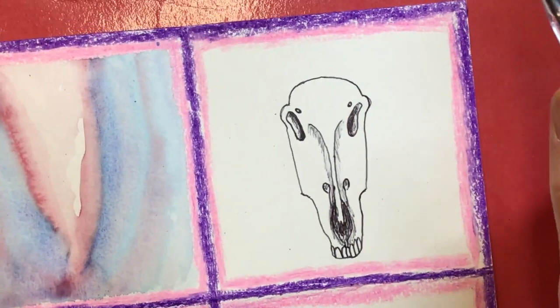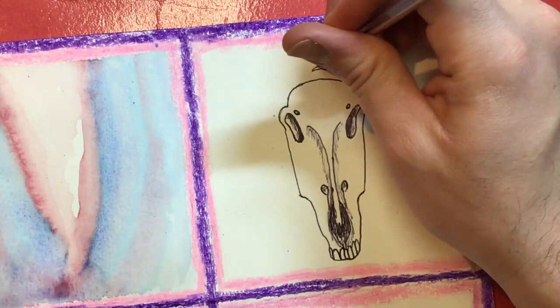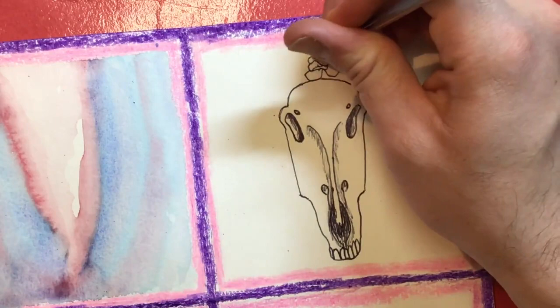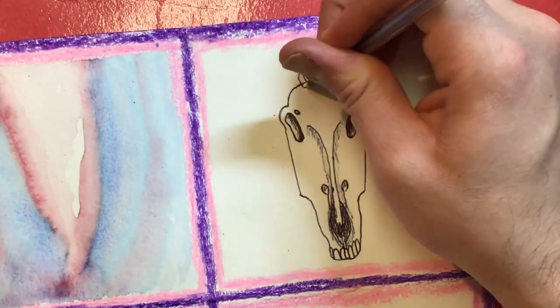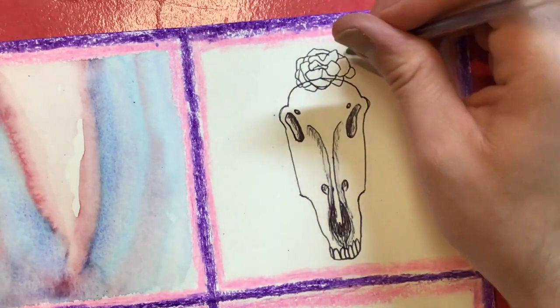And then we're going to put on our horse's head a beautiful flower. So to draw the flower we're going to draw little repetitive shapes that look like this. Little ruffled up shapes. And this will be the flower on our horse.